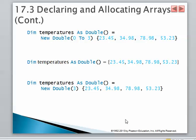Here there are three different examples of declaring the same thing. For example, Dim temperatures as Double, they have open and closing parenthesis, so I don't know how many, but then that one is being initialized. It says equals, then it says New Double, because they are considered objects. When variables are considered objects in Visual Basic we need to use New, like create an object. Then there is 0 to 3 on the very first example. That means we're going to have four elements: 23.45, 34.98, 78.98, 53.23. So that's one possibility.